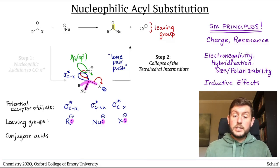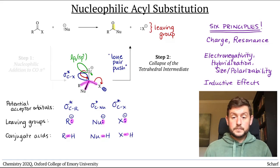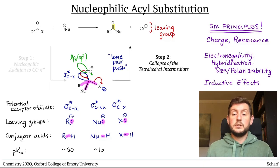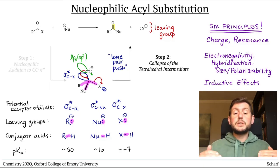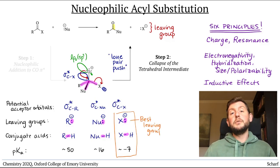Then draw their conjugate acids. Just attach an H where the lone pair was. Identify the functional group that you've just drawn and find the pKa of that functional group. The lower the pKa of the leaving group's conjugate acid, the better the leaving group is.